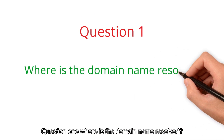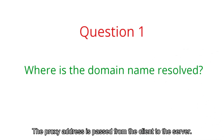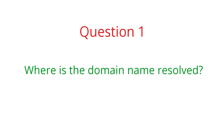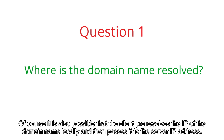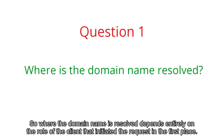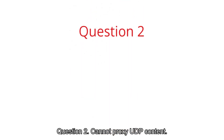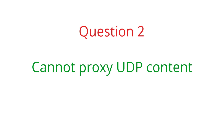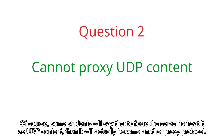Question 1: where is the domain name resolved? The proxy address is passed from the client to the server. If the client passes a domain name address, the domain name will be resolved on the server. Of course, it is also possible that the client pre-resolves the IP of the domain name locally and then passes the IP address to the server. So where the domain name is resolved depends entirely on the client that initiated the request. Question 2: why can't UDP content be proxied? As seen in the interaction steps, the entire interaction does not distinguish between TCP or UDP fields, so it can only proxy TCP content.